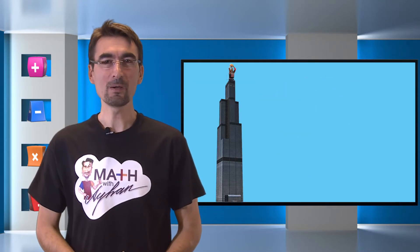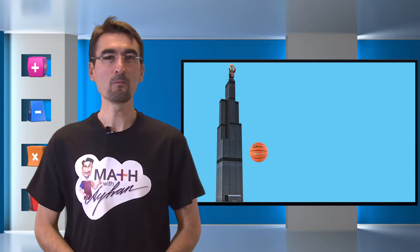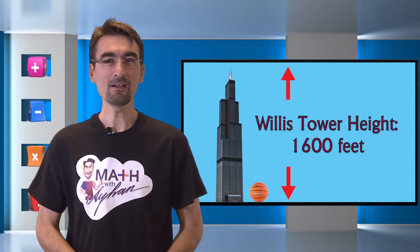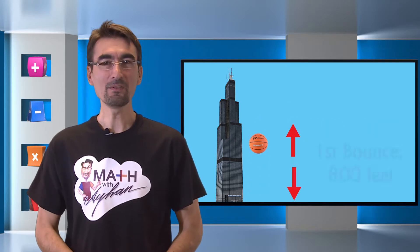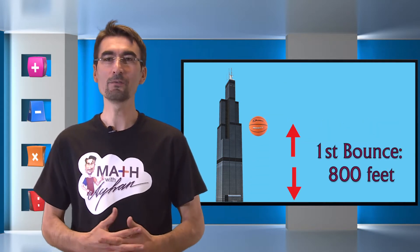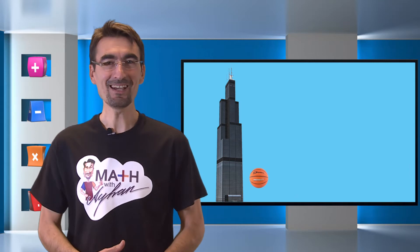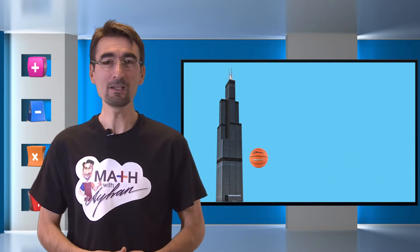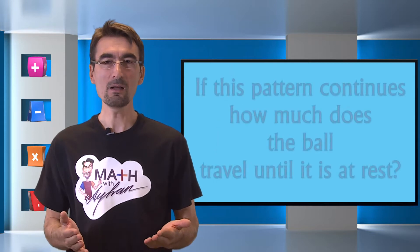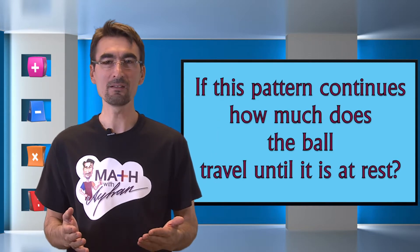Let's say Michael Jordan drops a basketball from the top of Willis Tower which is at a height of 1600 feet. The ball bounces back up to 800 feet for the first time. The second time the ball bounces back up to only 400 feet. Well if this pattern continues, how much does the ball travel until it is at rest?